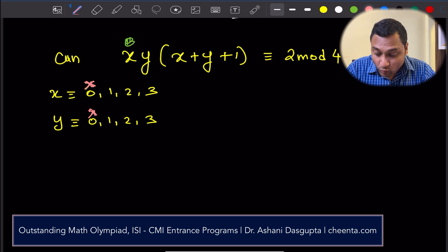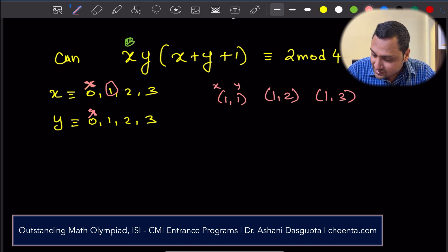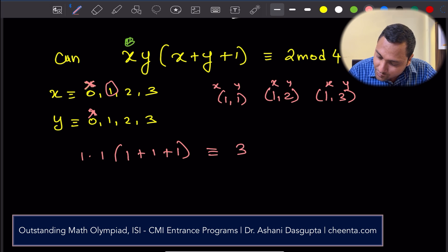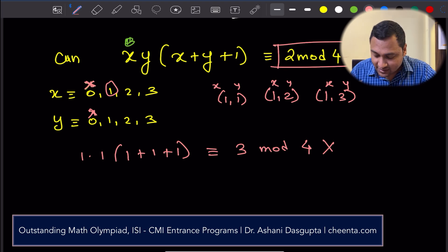Now, we can check with 1. So, basically, we can check (1,1), (1,2), (1,3). These are the three pairs we can check. So, let's check with 1. 1 times 1, 1 plus 1 plus 1, that is congruent to 3 mod 4. Doesn't work. Because it has to be equal to 2 mod 4. That's what we want.